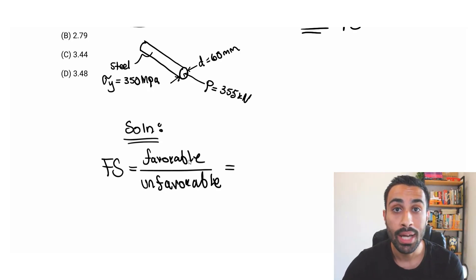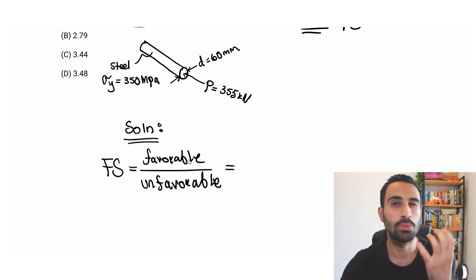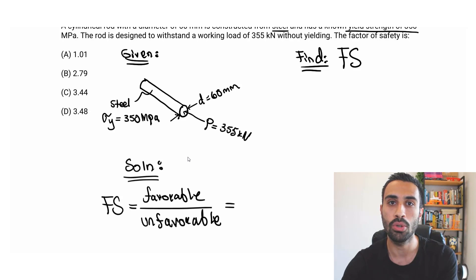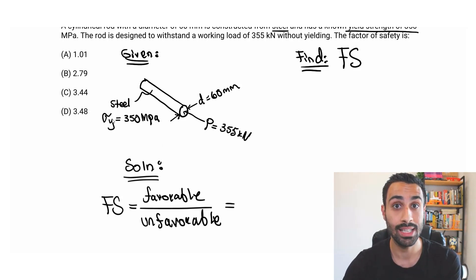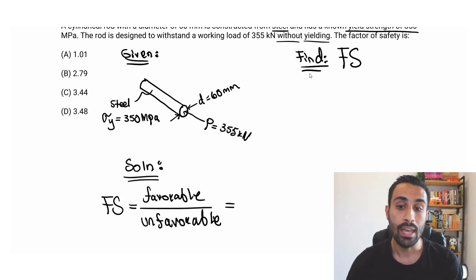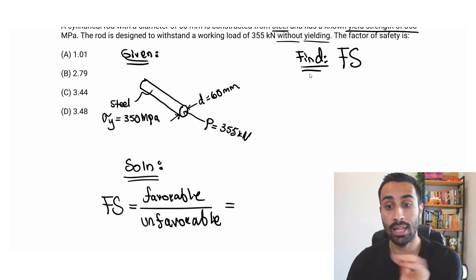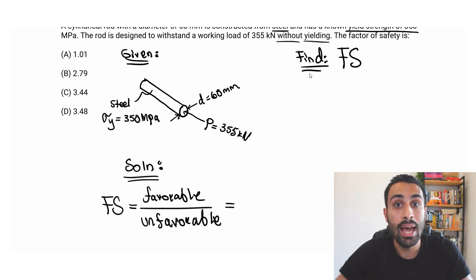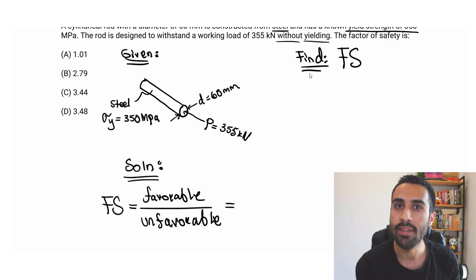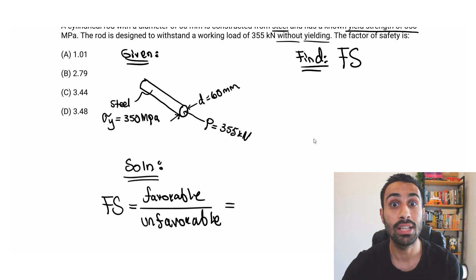In our case, the favorable is the stuff resisting failure — specifically, the strength of the material, which is the yield strength. We focus on yield strength here because our goal is to remain below the yield point. If it were the ultimate stress criterion, we'd use the ultimate strength. The favorable is what resists failure, and here that's sigma Y.